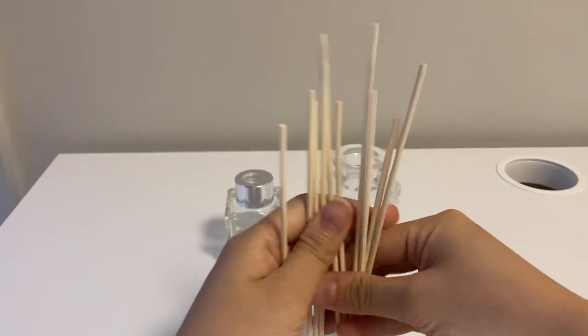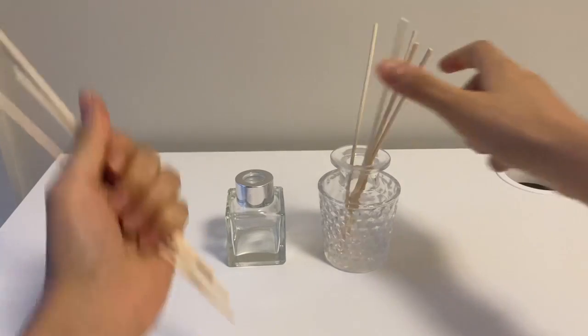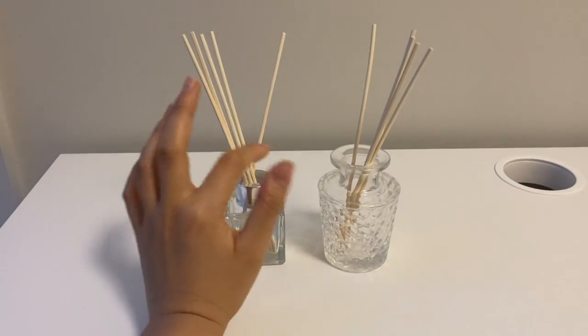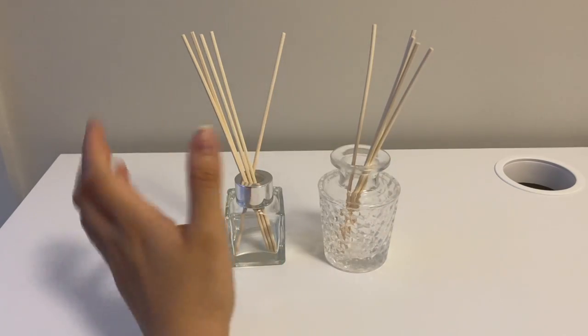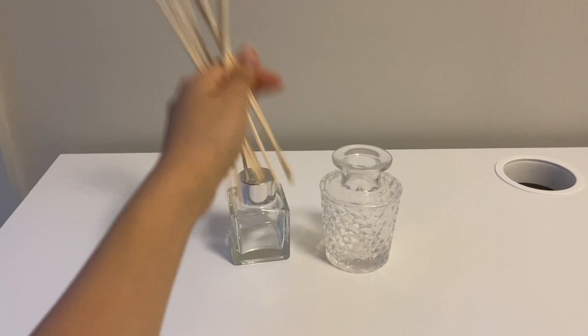Secondly you will need some reed sticks made of wood or synthetic material. So these are the most simple type of reeds. You normally use around four to five per bottle and these reeds allow the liquid in the bottle to run up the reed and diffuse the scent around the home.